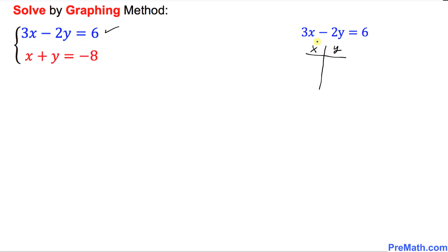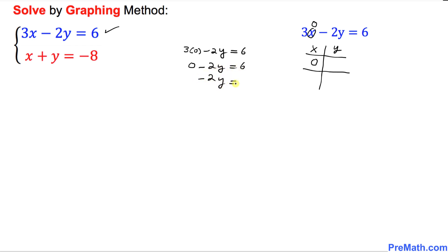Here is our strategy: put x equal to 0 and solve for y. Wherever x appears, we plug in 0. So we get 3 times 0 minus 2y equals 6, which gives us negative 2y equals 6. Dividing both sides by negative 2, y turns out to be negative 3. So when x equals 0, y is negative 3.